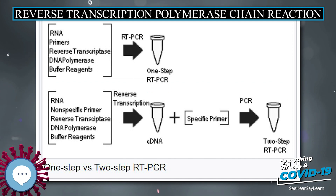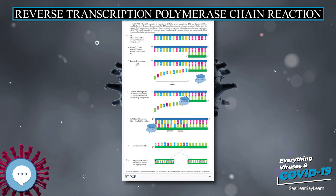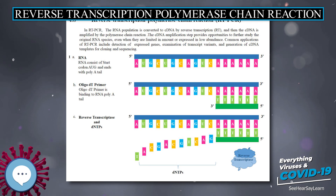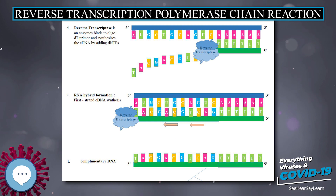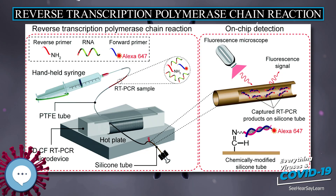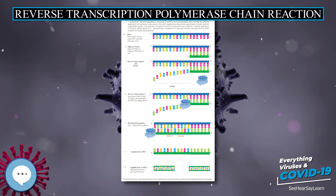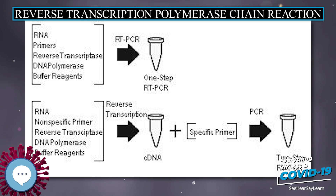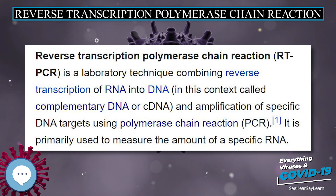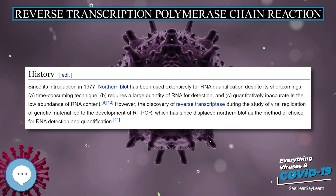SYBR Green emits its fluorescent signal simply by binding to the double-stranded DNA in solution, while TaqMan probes, Molecular Beacons, and Scorpions generate fluorescence depending on a resonance energy transfer, FRET, coupling of a dye molecule and a quencher moiety to oligonucleotide substrates. When SYBR Green binds to double-stranded PCR products, it emits light upon excitation and the intensity of fluorescence increases as PCR products accumulate. However, since the dye does not discriminate between PCR product double-stranded DNA and primer dimers, overestimation of target concentration is a common problem. SYBR Green is the most economical and easiest to use among real-time RT-PCR detection methods.